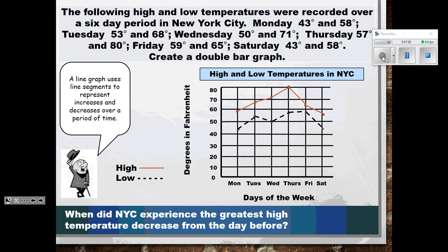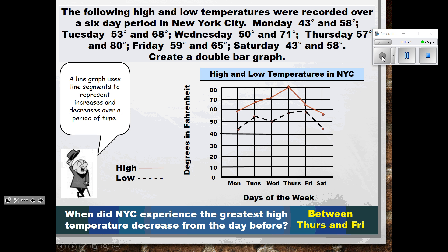When did New York City experience the greatest high temperature decrease from the day before? We only see two periods where a decrease occurred — between Thursday and Friday, and between Friday and Saturday. You can tell by looking at the graph which had the greatest decrease by finding the steepest line, which is between Thursday and Friday. Hopefully this gives you some ideas about how to make line graphs and the kind of information we can gather from them.